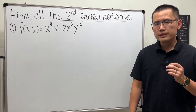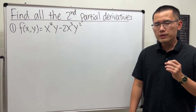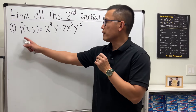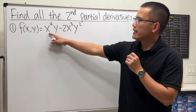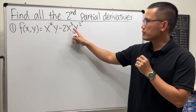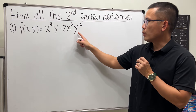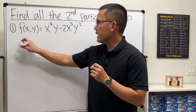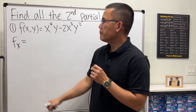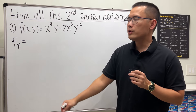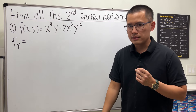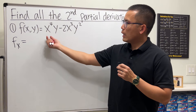In this calculator tutorial we will see how to find all the second partial derivatives. Our function is f of x, y equals x to the fourth power times y minus 2x cubed times y squared. Let's go ahead and get fx first — that means we are going to treat x as the variable and y will just be a constant.